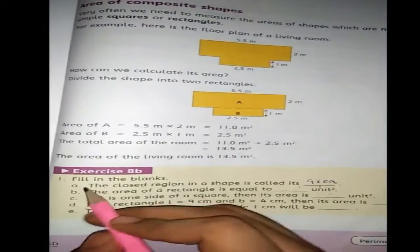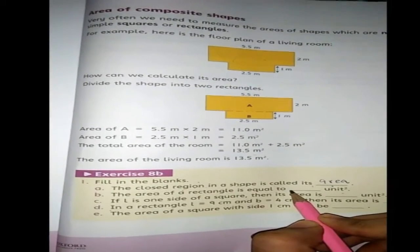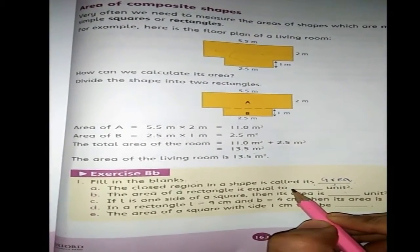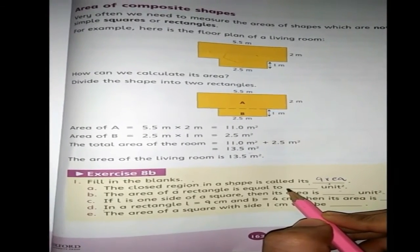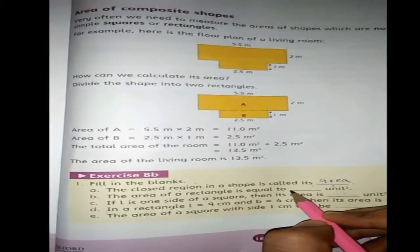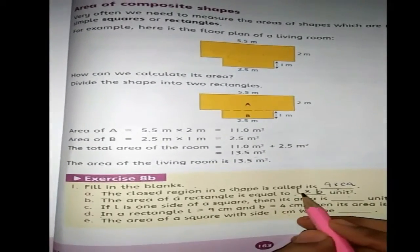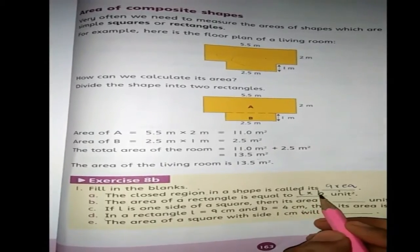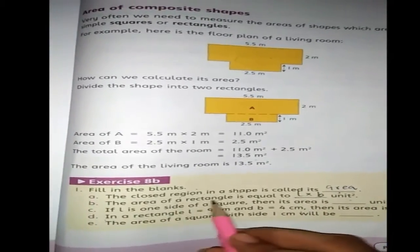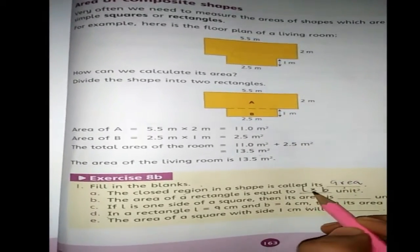Let's move to statement number 2: the area of rectangle is equal to dash. The formula for area of rectangle, which we have already solved and practiced with an example, is L multiplied by B. We will write the formula L multiplied by B as the answer.